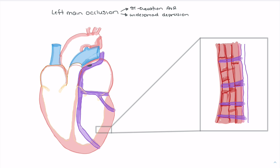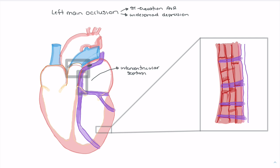There are going to be a number of vessels coming off of here that supply two important parts of the heart. The first is the intraventricular septum — some vessels coming off the proximal portion of the left coronary artery supply it. Additionally, another area supplied is called the right ventricular outflow tract, the upper portion of the right ventricle leading into the pulmonary artery that supplies blood to the lungs.